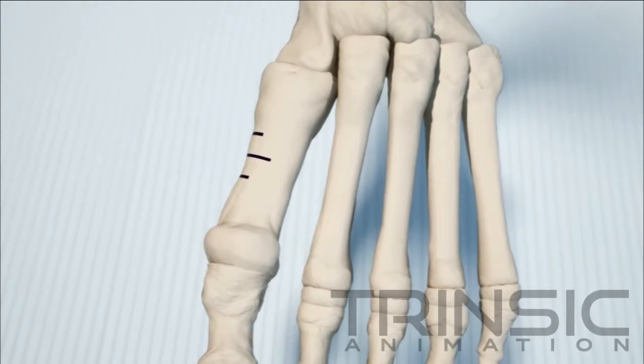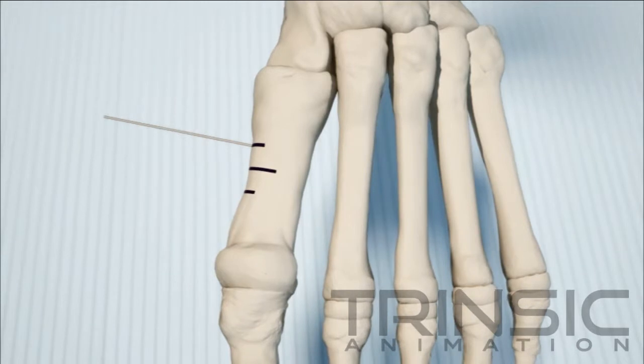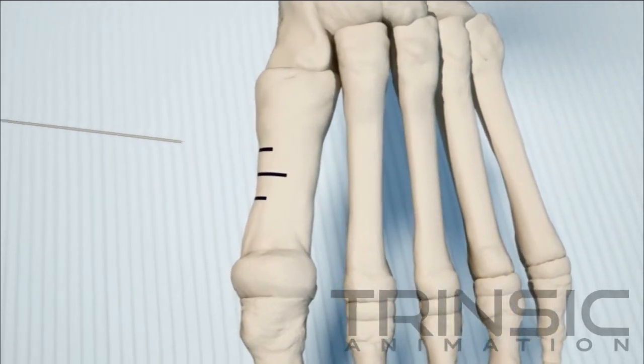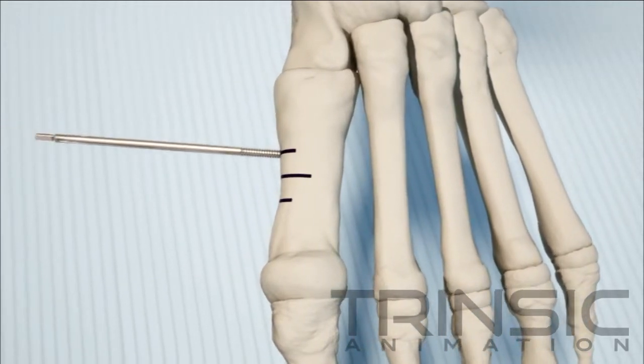Use a 1.6 mm K wire where the first proximal pin will be. Position the wire perpendicular to the bone surface. The wire is used to puncture the cortex. Remove the wire and insert the first half-pin.